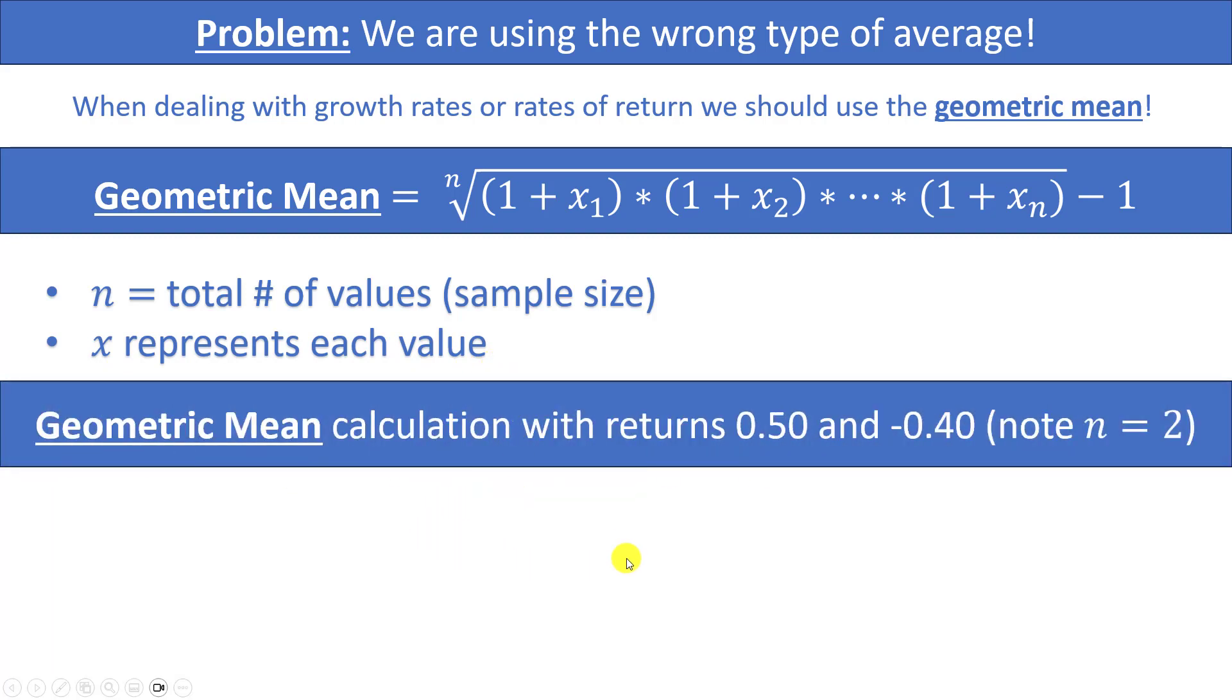Let's apply this formula to our situation. So we had a return of 50% represented by 0.5 and negative 0.4, so our value for n is going to be 2. That means we have to take the second root or the square root of 1 plus each of those rates multiplied by each other. So we have 1 plus 0.5 times 1 plus negative 0.4 and then we have to subtract 1 at the end. This will get us the square root of 1.5 times 0.6 minus 1. If we type this into our calculator we will get negative 0.0513.